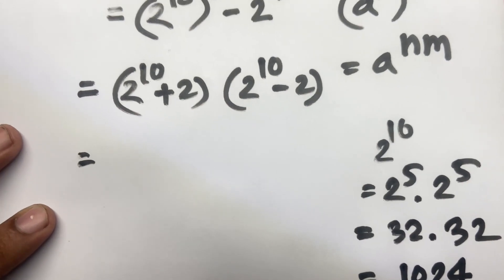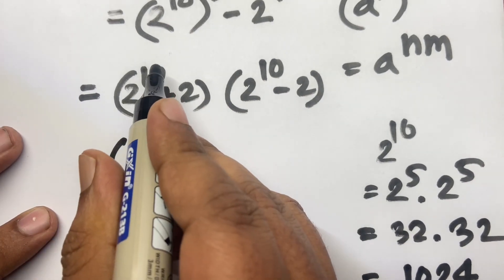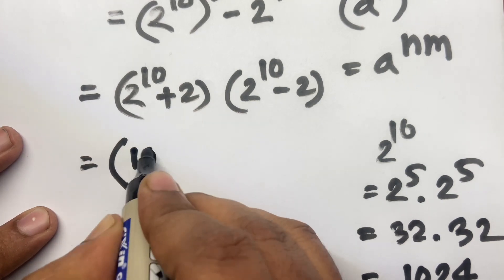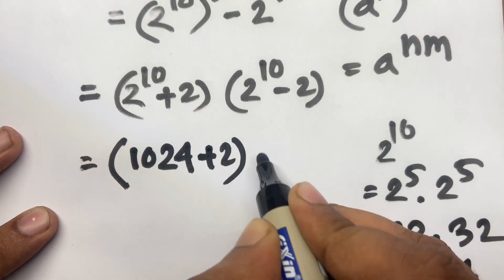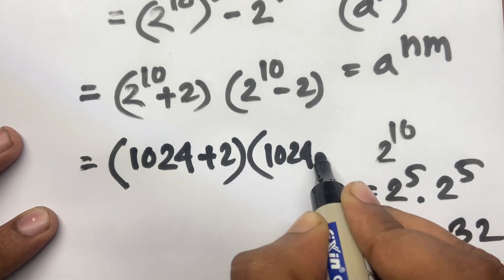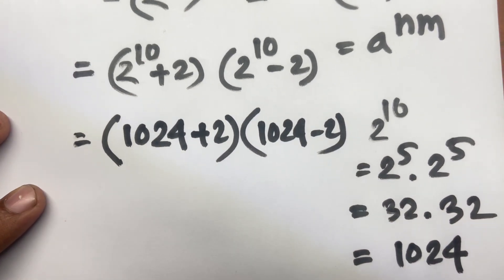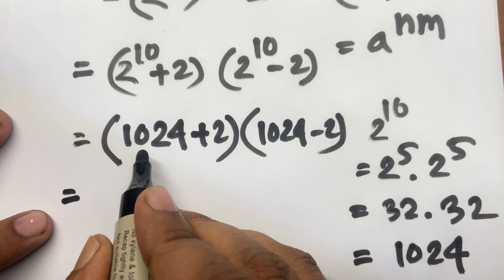Now here is 2 to the power 10, I can say easily 1024 plus 2, 1024 minus 2. Now 1024 plus 2 is equal to 1026 times 1022.